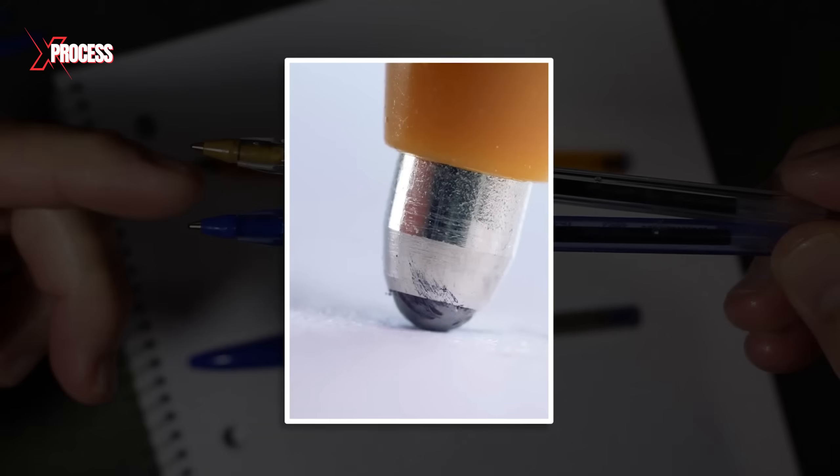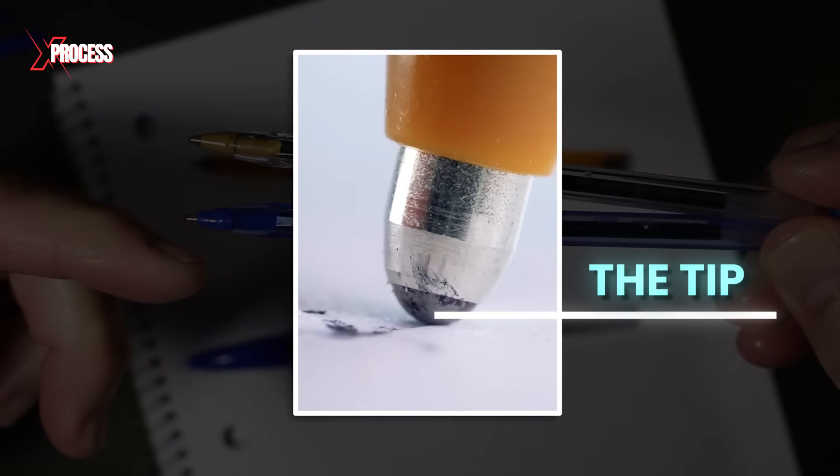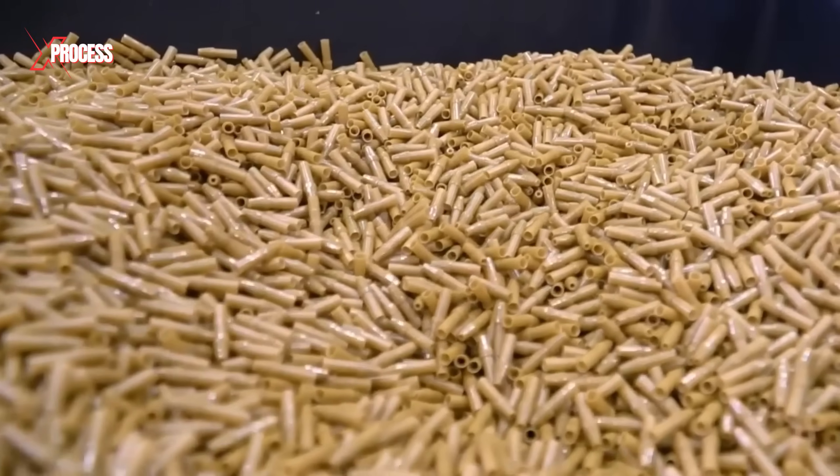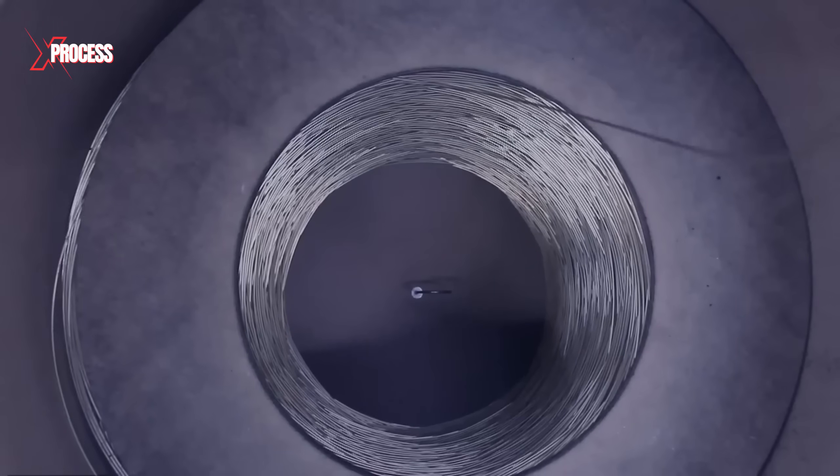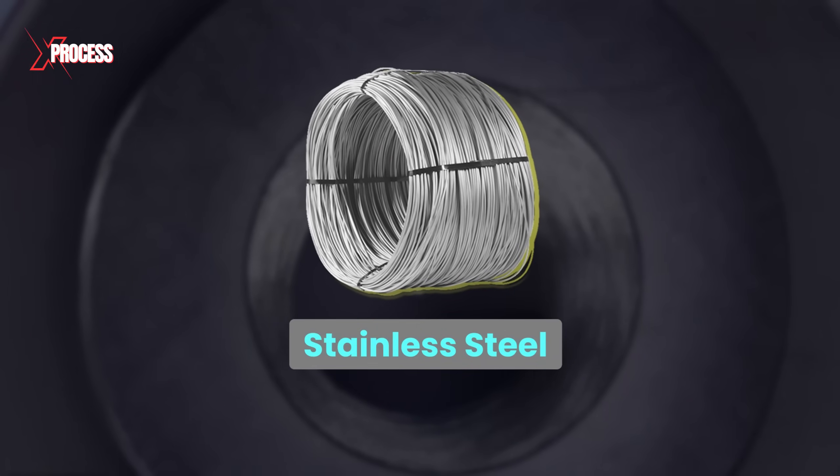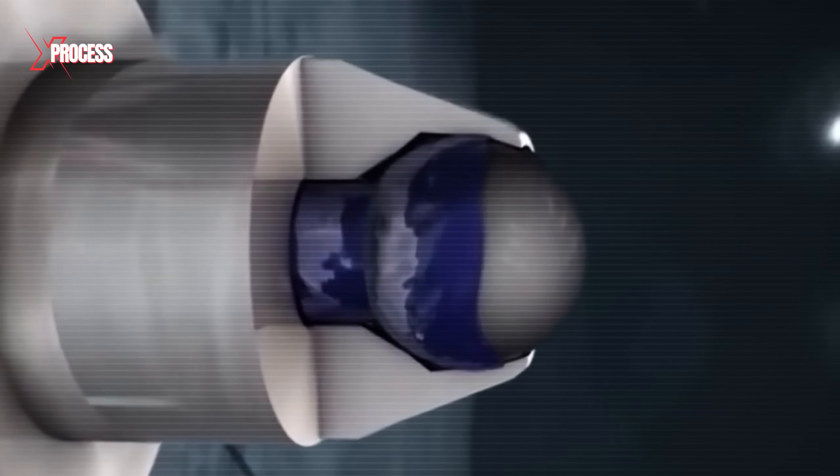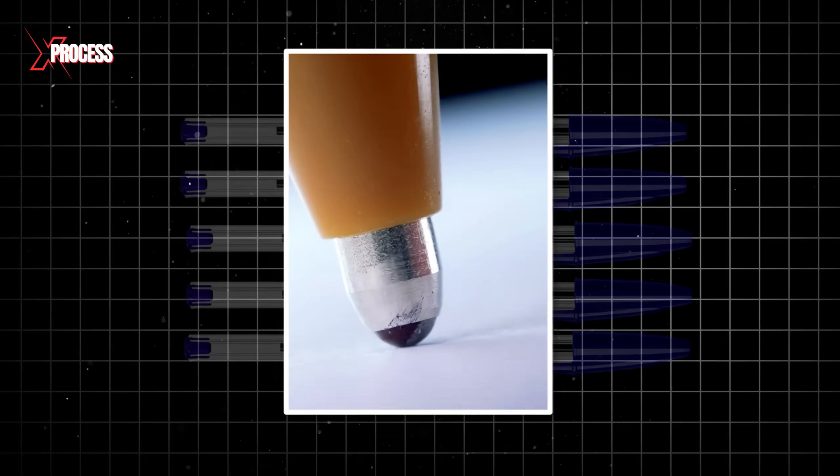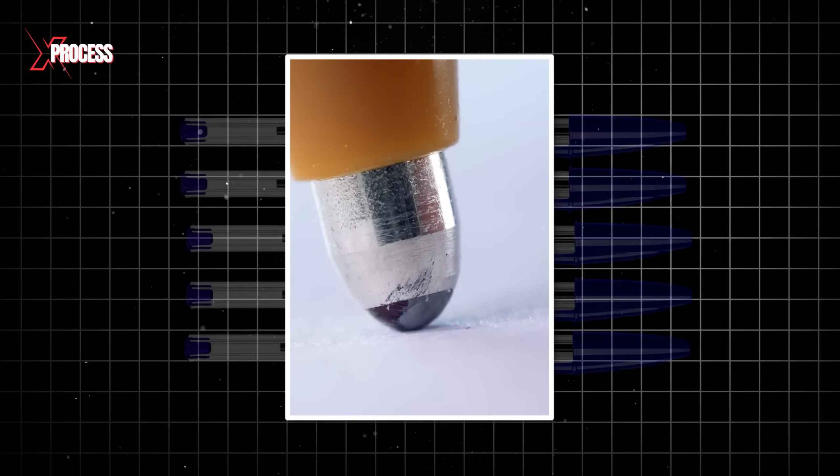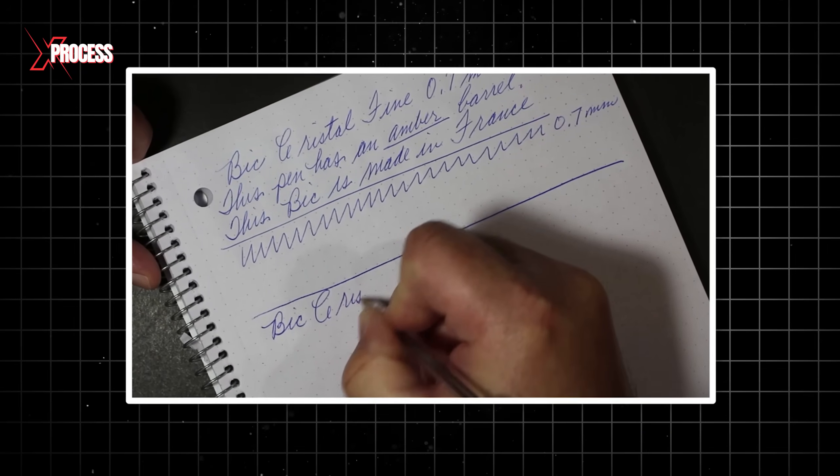The metal balls that pass the quality assessment are ready to be assembled within a socket known as the tip. This component, which encases the ball, is crafted by stamping a piece of stainless steel. It's crucial for the ball to snugly fit into the socket, leaving only a minimal gap for the ink to flow through, ensuring optimal performance of the pen.